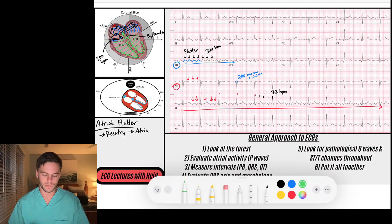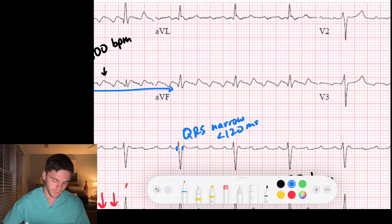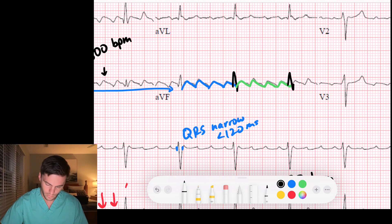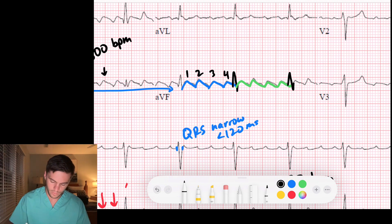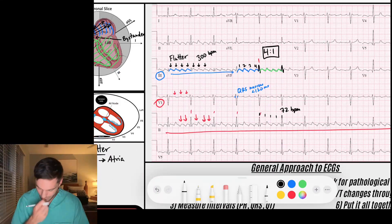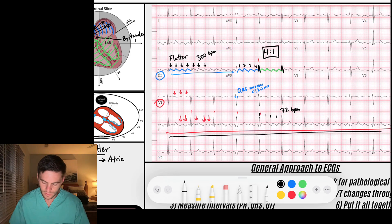Now let's determine how many flutter waves occur per QRS complex. Looking at the AVF lead, I count one flutter wave, two, three, four — and then after the fourth, I get a QRS complex. Then again: one, two, three, four flutter waves, followed by a QRS complex. So what I'm seeing is four flutter waves for every one QRS — that's 4:1 conduction. We confirm this 4:1 conduction is consistent throughout the rest of the strip.